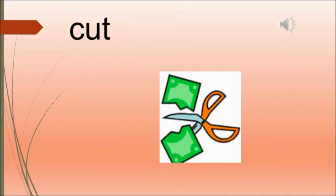Cut means to remove a part of something. Like, you can see out here, the paper is being cut into two halves — yes, with the help of scissors. A nut is a dry fruit with a hard shell. So, you can see almonds and raisins — all these are different types of nuts.